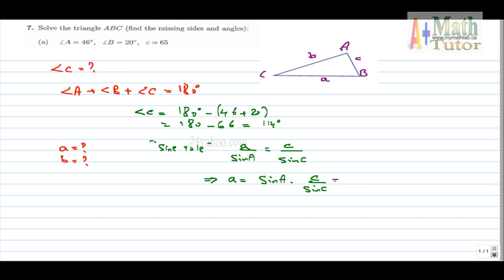We get sine A, which is sine 46, multiplied by side C, which is 65, over sine angle C, that we obtained, 114. And we get, using the calculator, 51.18 units.